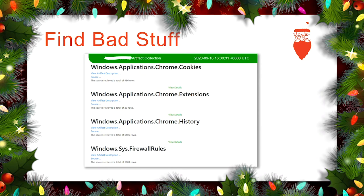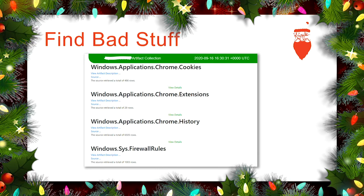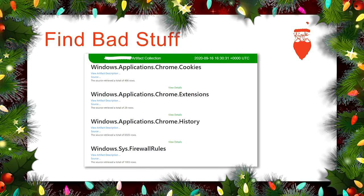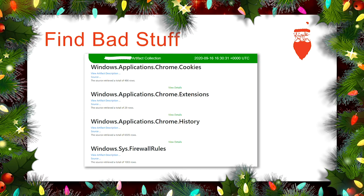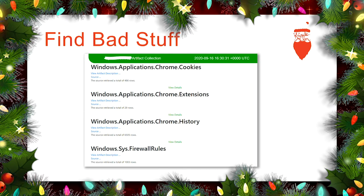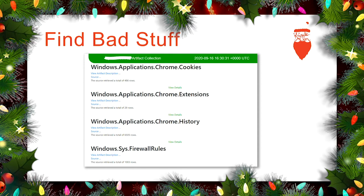Now you can find the bad stuff. This is the HTML report — you can see it's collected some cookies, Chrome extensions (which as we all know can be malicious), and browser history, which, if you're looking for a user who's spending all day on Facebook, there it is. Whatever you collected is going to be in this report, so it's sort of a duplicate of running whatever tools you like on these artifacts.